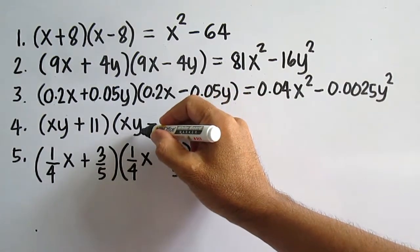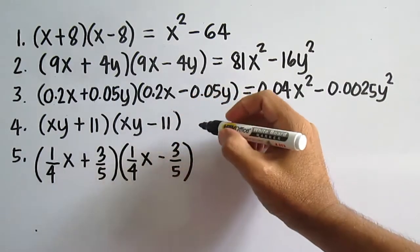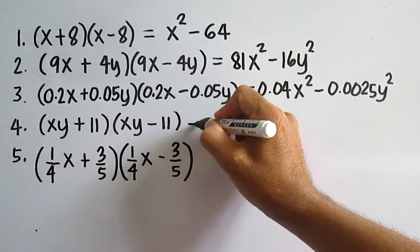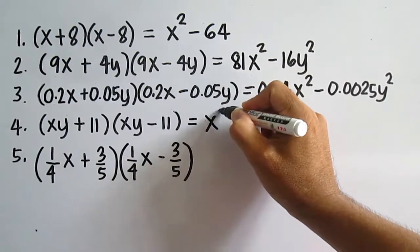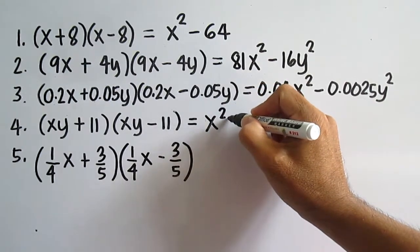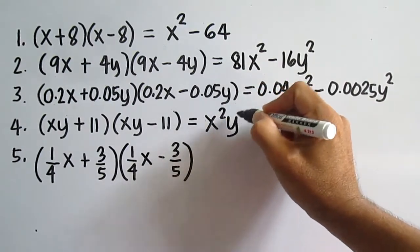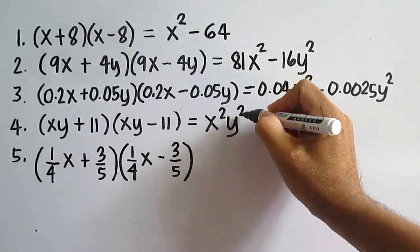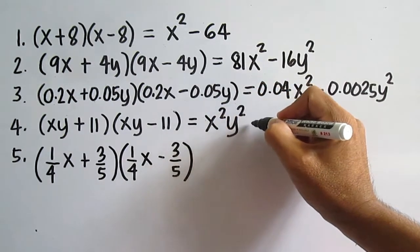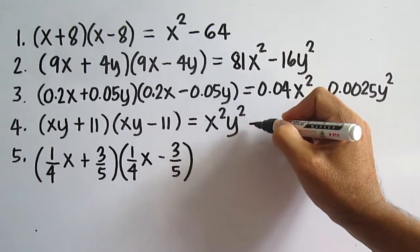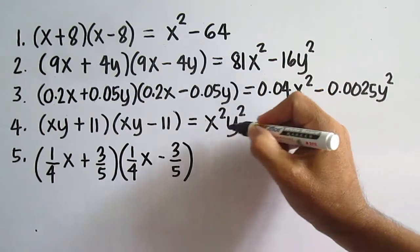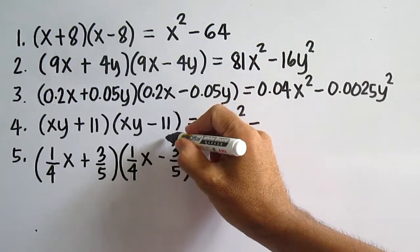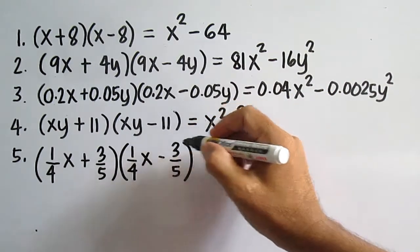Number four: xy times xy — x times x is x squared, y times y is y squared — so we get x squared y squared, minus 11 times 11 is 121.